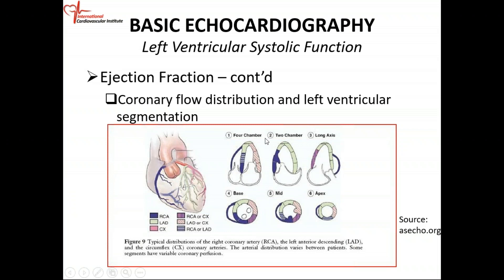In your apical four-chamber view, the lateral wall is probably LAD or circumflex. The uppermost portion of the septum is LAD, and the lowermost portion is RCA. The lateral wall is probably the circumflex or the diagonal branch of the LAD, and the lowermost portion is the RCA.